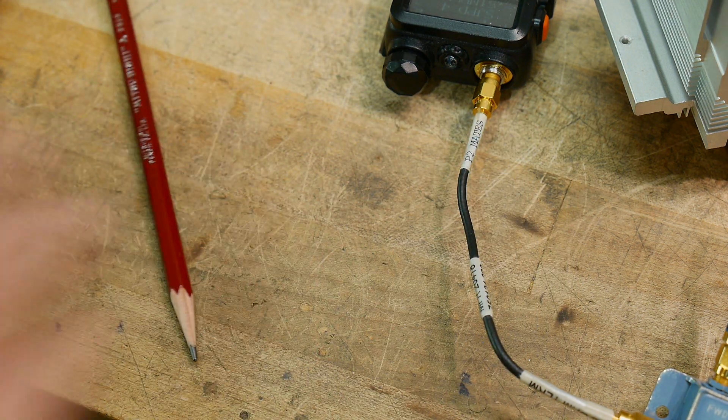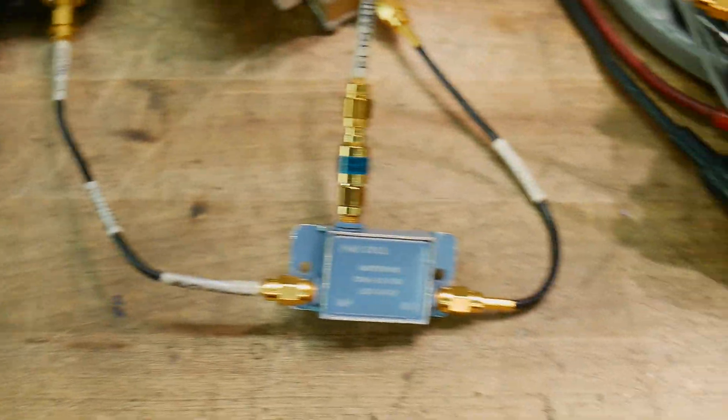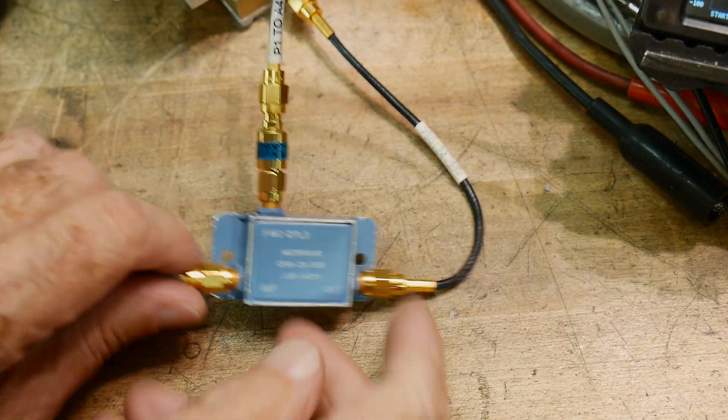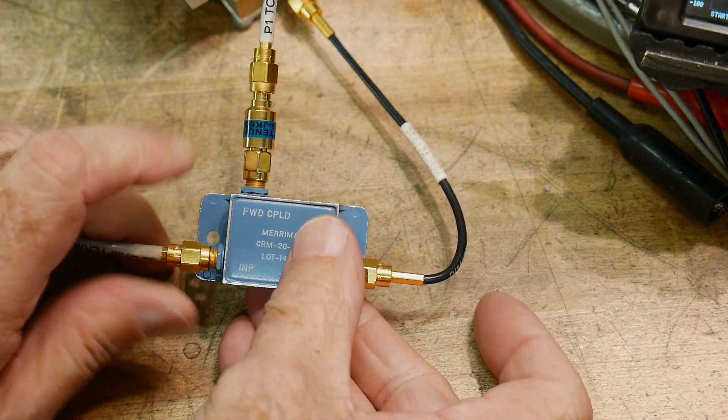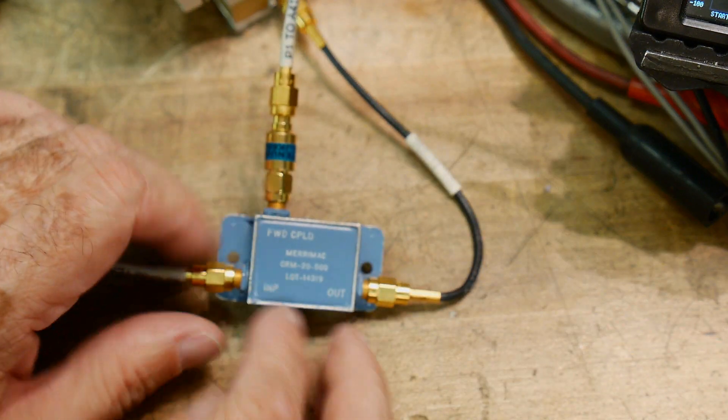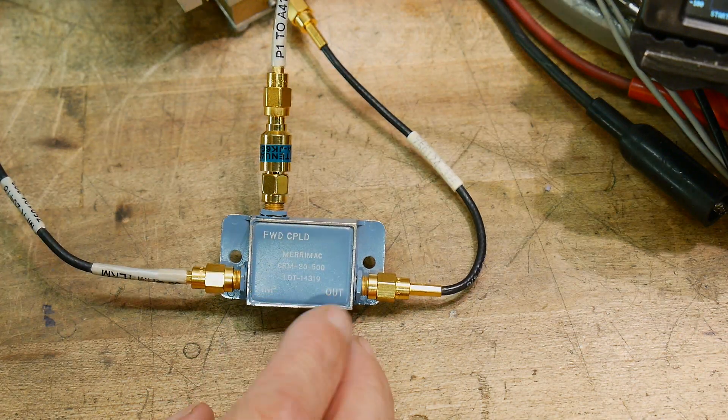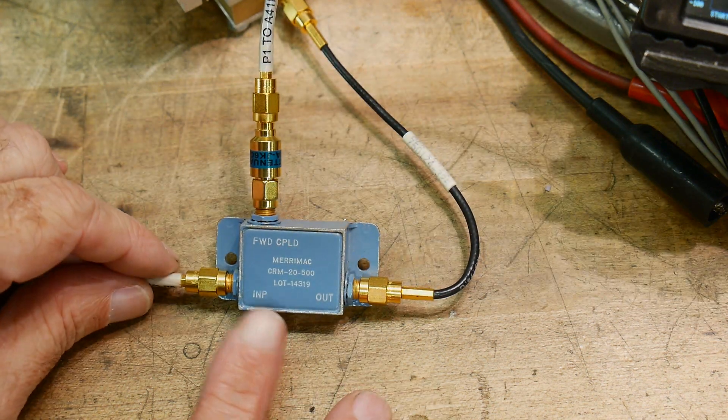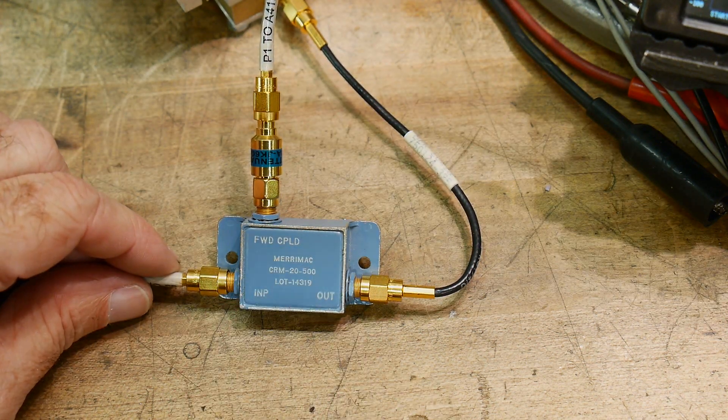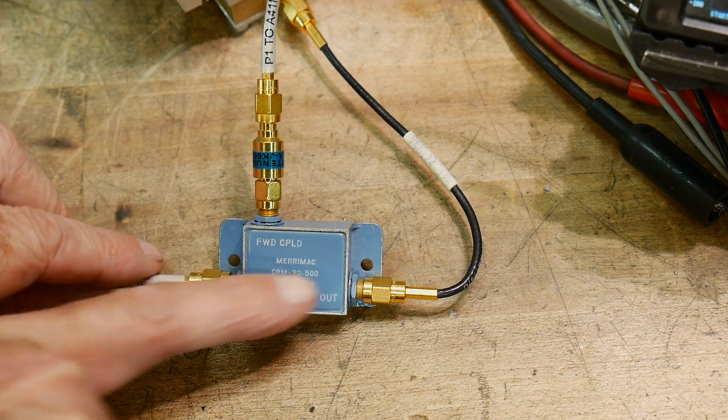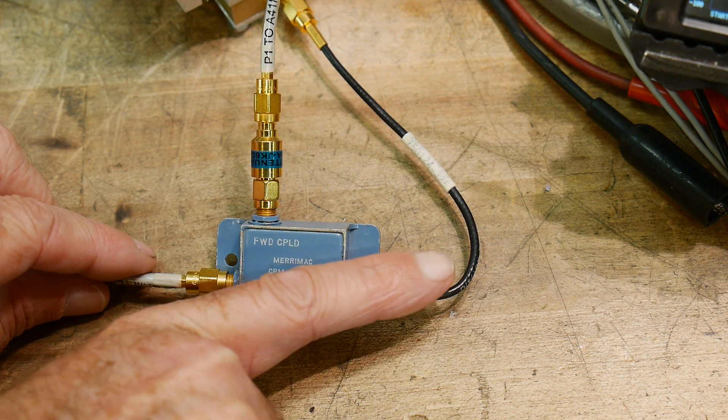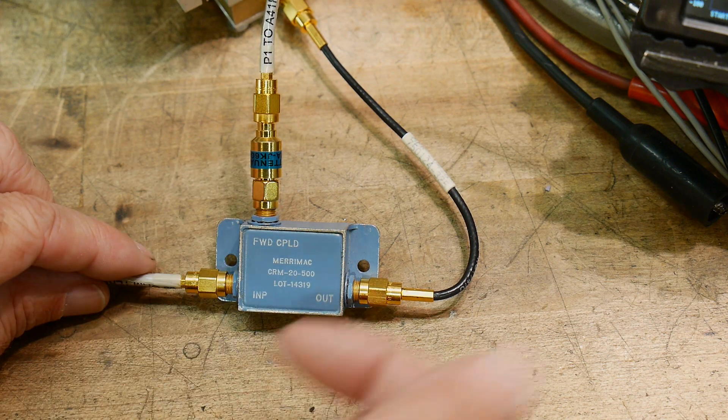Let's take a look at the setup. So we're going to use this coupler here that I have. This is a Merrimack coupler, and it's good from 10 MHz to 1,000 MHz. And you can see that it's labeled input-output and forward-coupled.